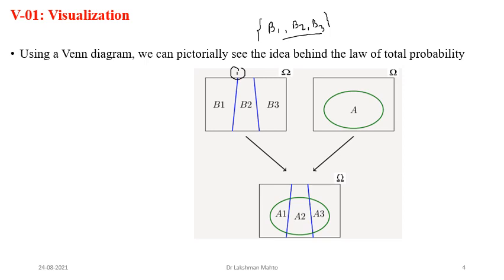B1, B2, B3 satisfy all three properties of being a partition: mutually exclusive, mutually exhaustive, and non-empty. B1 contains some outcomes of the sample space omega, B2 also contains some outcomes, and B3 likewise. B1 is mutually exclusive with respect to B2, B2 is mutually exclusive with respect to B3, and B3 is mutually exclusive with respect to B1. All three properties are satisfied, so B1, B2, B3 together introduce a partition within the sample space.